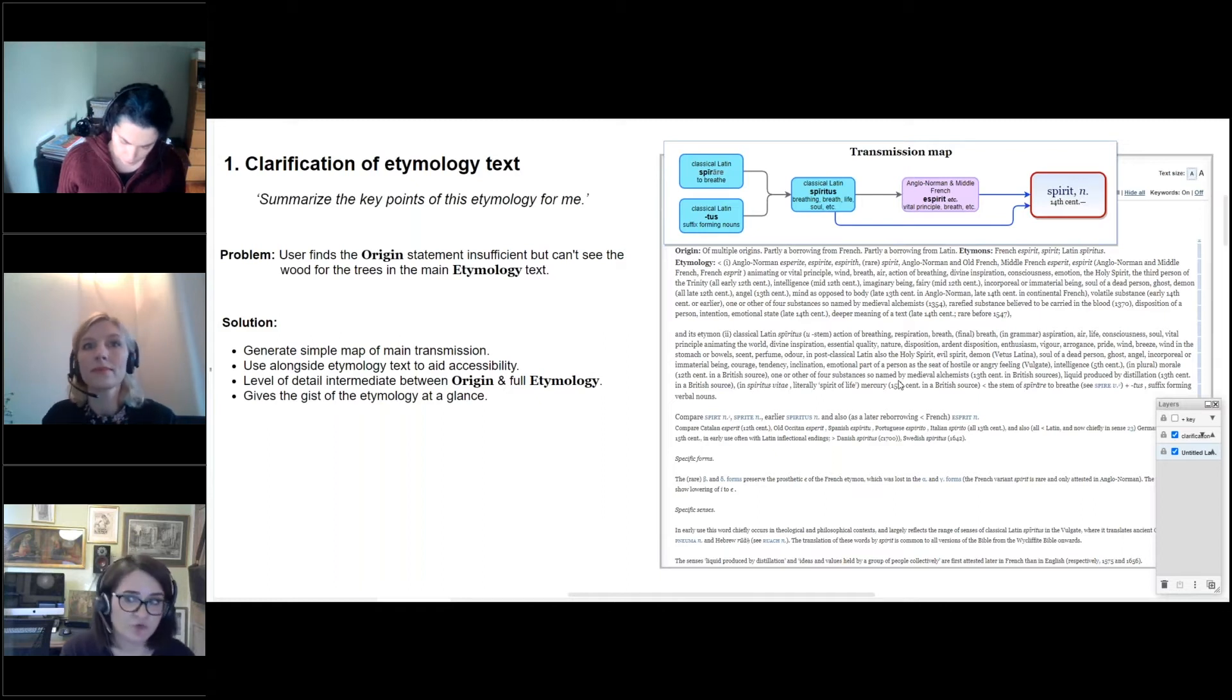So here's how we think a visualization tool might go some way to meeting that particular need. It could use the etymology data to generate a simple flow chart of just the main transmission of a word in an entry, giving a level of detail that sort of bridges the gap really between the minimal origin statement and the fuller etymological discussion below. The diagram, we thought, could then be used alongside the full text as a sort of explanatory visual aid to make its content more accessible and easier to use and navigate. So perhaps it could provide a handy sort of outline or summary for the researcher in a hurry, or maybe serve as a sort of friendly guide map to the full discussion for a student who might otherwise find it a bit intimidating or confusing.